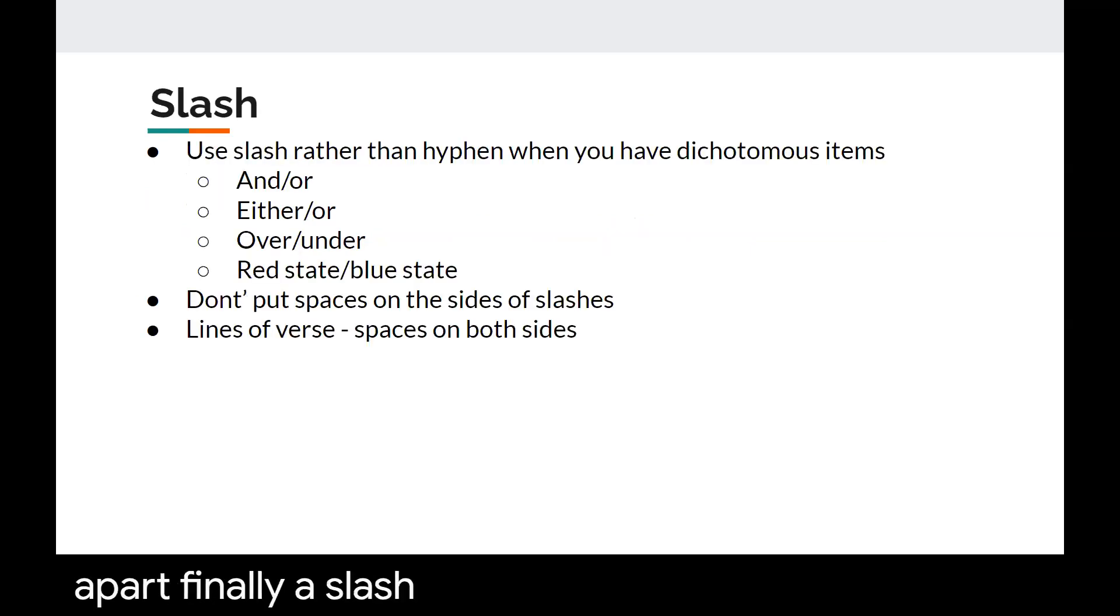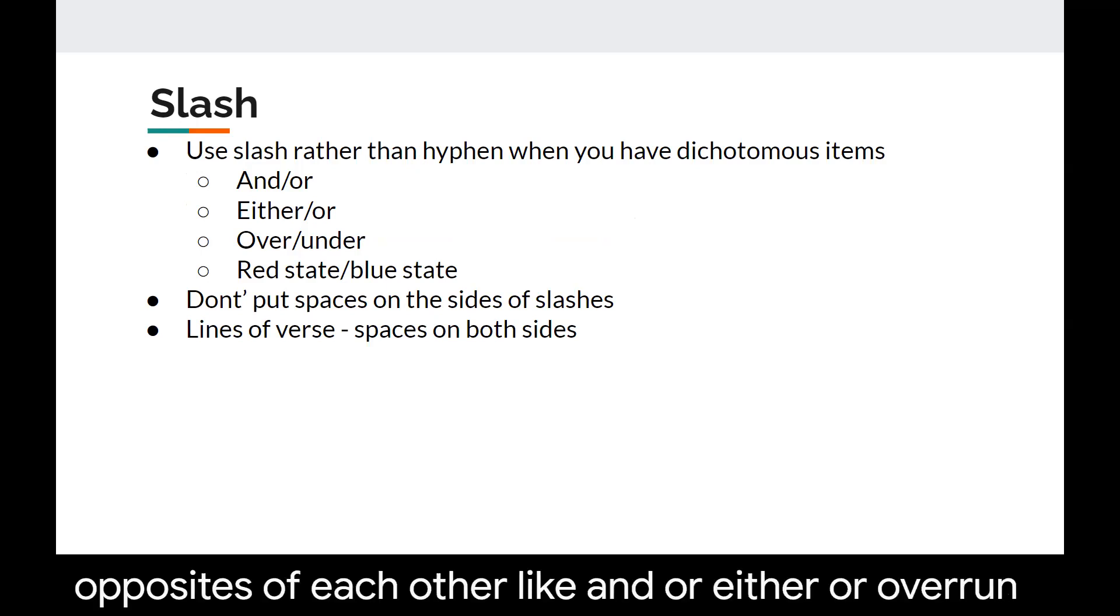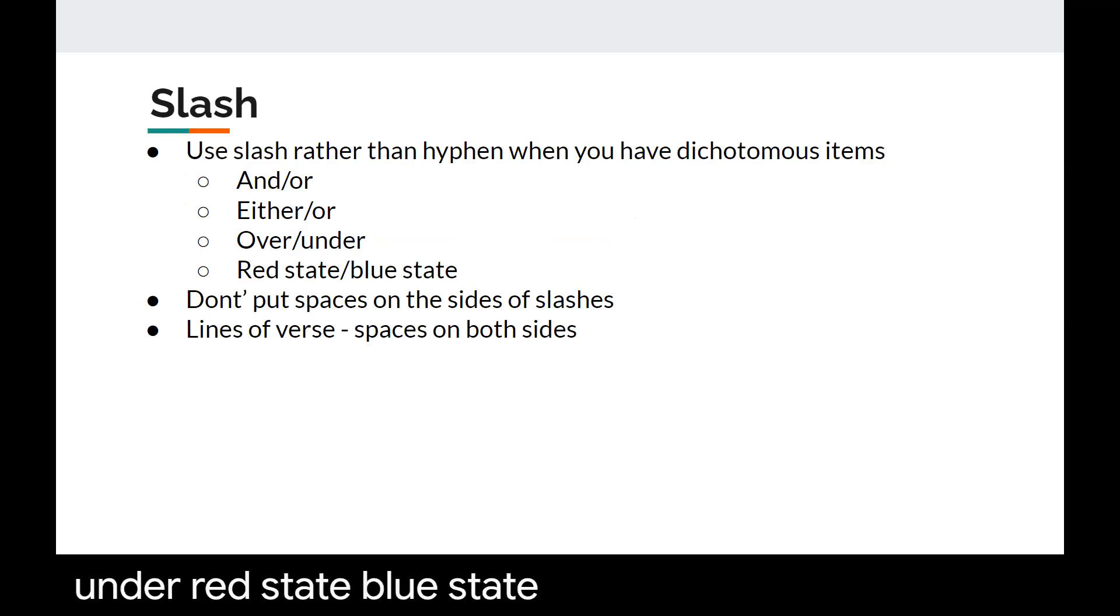Finally a slash is preferred when you have two dichotomous items or two items that are kind of opposites of each other like and or either or over under red state blue state. You're not going to put a space on the side of the slash because again you're trying to show the dichotomy of those two items and finally if you're quoting or using lines of verse whether that's lyrics or poetry or whatever you would use spaces on both sides of the slash but again that is very rare. Typically you don't want to use spaces with slashes.